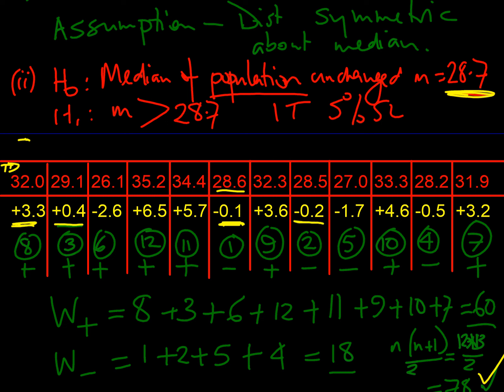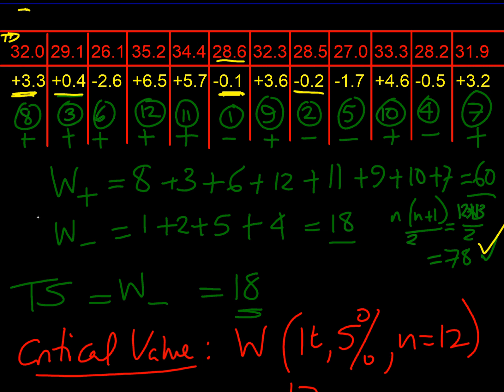From the two W values, we take the lower value as our test statistic, since that is what the Wilcoxon table is designed for. The lower value is W− = 18, so our test statistic is 18.